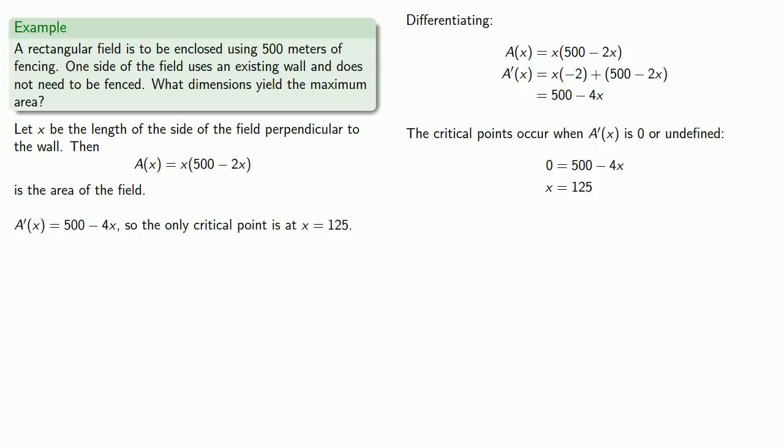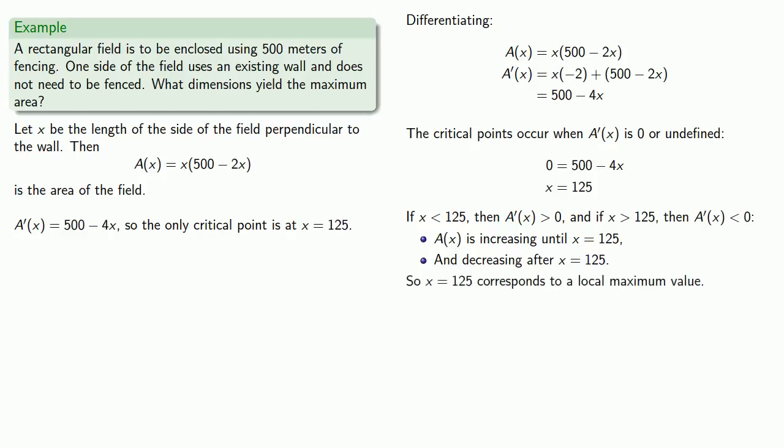And let's do our first derivative test. If x is less than 125, the derivative is positive. And if x is more than 125, the derivative is negative. And so that means a of x is increasing until x equals 125 and decreasing after 125. So x equals 125 corresponds to a local maximum value.